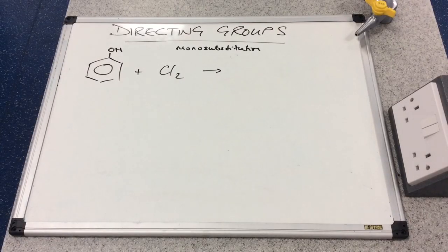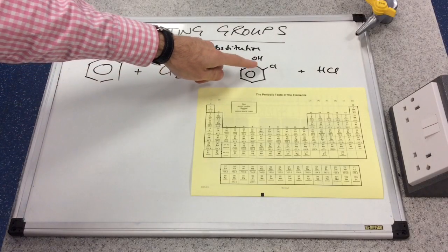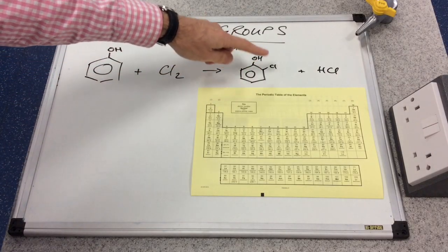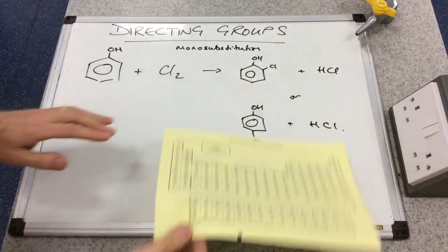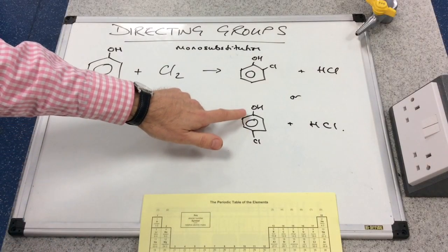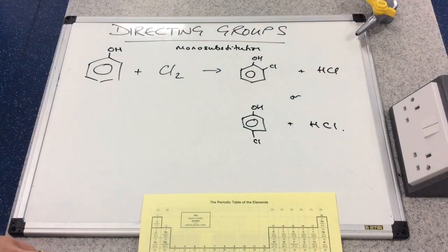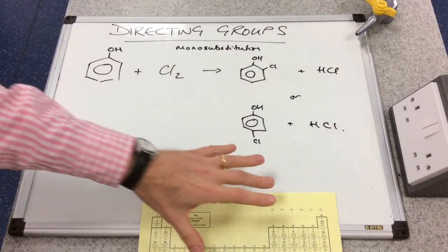If we now look at the reaction between phenol and chlorine — using monosubstitution to make the comparison with benzene — things are different. Substitution occurs at position 2, giving 2-chlorophenol, or at position 4, giving 4-chlorophenol. You can also get substitution at position 6, but that is equivalent to position 2, so it isn't listed separately.